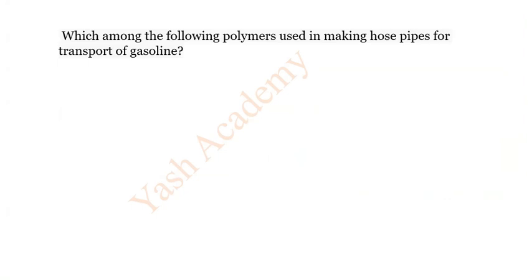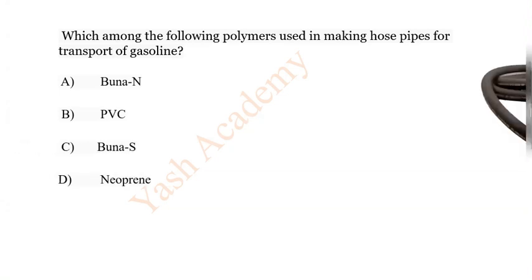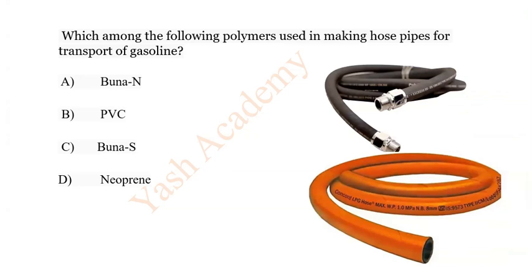Which among the following polymers used in making hose pipes for transport of gasoline? Options: A Buna-N, B PVC, C Buna-S, D Neoprene. So these are the pipes and correct answer is D: Neoprene.